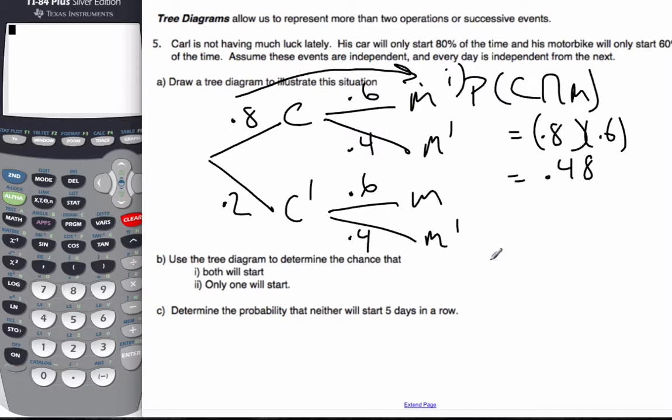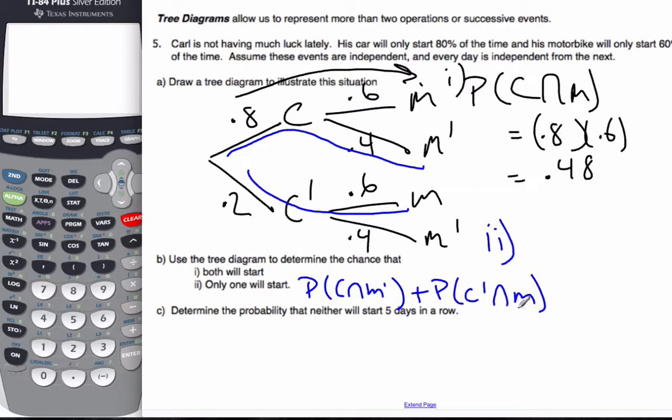Then it says find the probability that only one will start. Well, if that's what I'm looking for, that's this branch here because the car started, and that's this branch here because the motorcycle started. So that's the probability the car starts and the motorcycle does not, plus the probability that the car does not start and the motorcycle does. I have a habit of writing notation out because this is the thinking step. These are where you get your method points. Adding because they're two separate events, and these events are disjoint because they both can't happen at the same time.